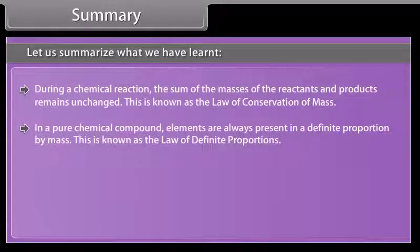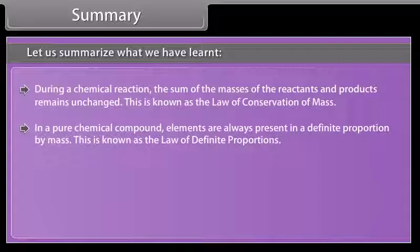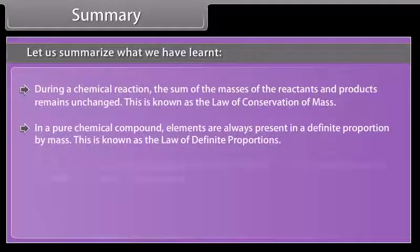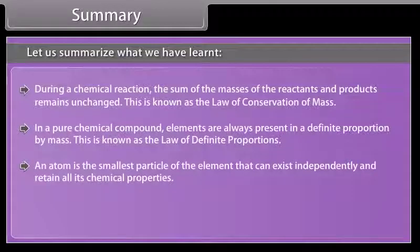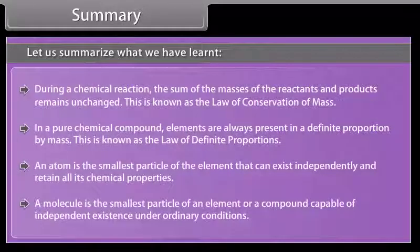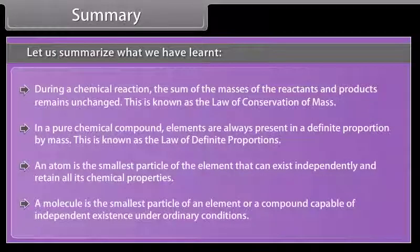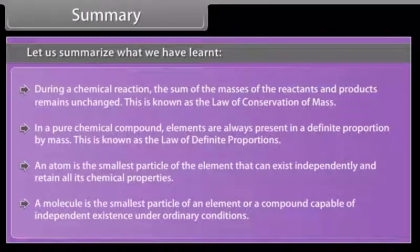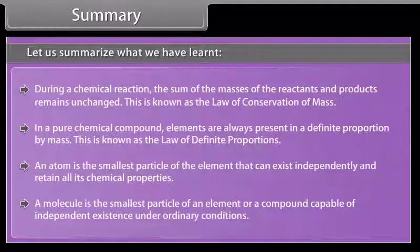In a pure chemical compound, elements are always present in a definite proportion by mass. An atom is the smallest particle of the element that can exist independently and retain all its chemical properties. A molecule is the smallest particle of an element or a compound capable of independent existence under ordinary conditions.